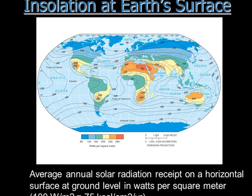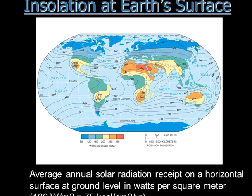More energy hits the equator than anywhere else. But if you look at this diagram, what it's telling you is the actual amount of energy that hits the surface of the earth is actually higher at the middle latitudes — the Tropic of Cancer and Tropic of Capricorn — that's where most of the energy is hitting, not really at the equator. So it seems like I lied to you, but I didn't.